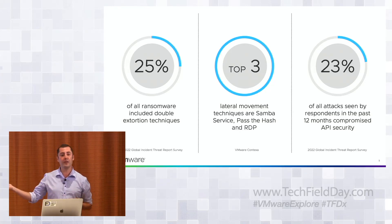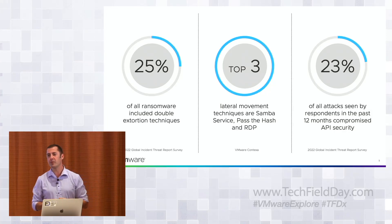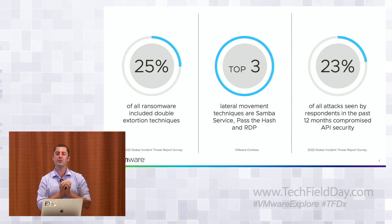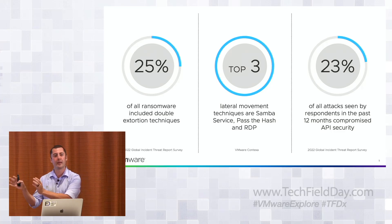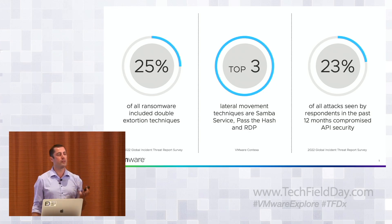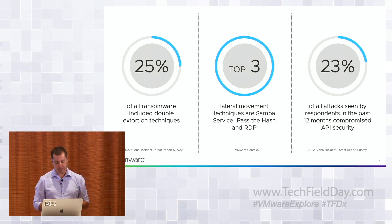What we've also seen with ransomware is double extortion campaigns. Ransomware is not only about encrypting files and demanding a ransom payout — malicious actors also try to exfiltrate critical data out of the environment, which enhances their leverage to demand ransom. About 25% of ransomware campaigns involve double exfiltration.